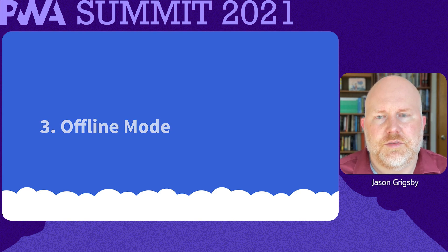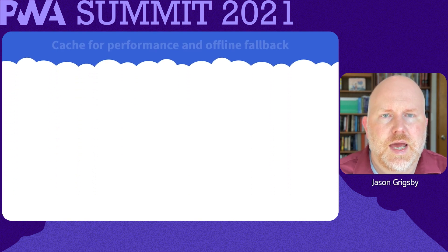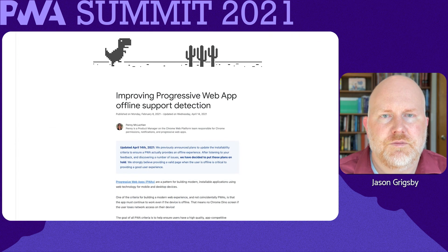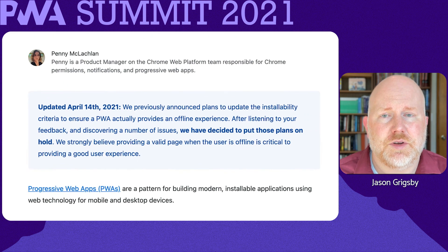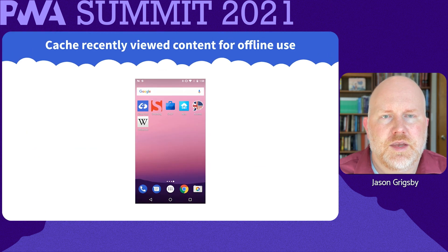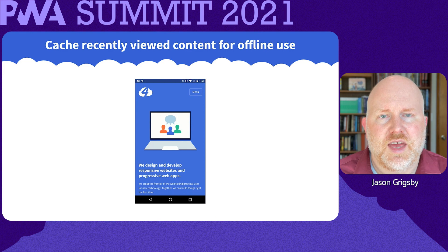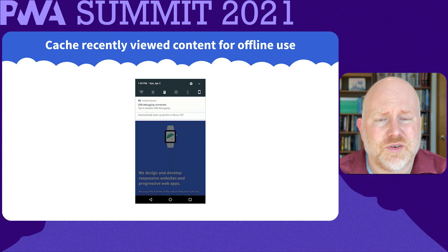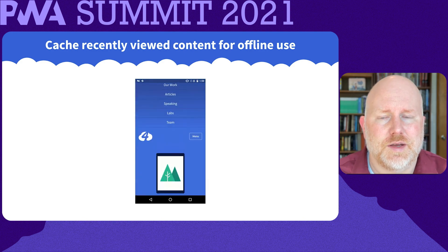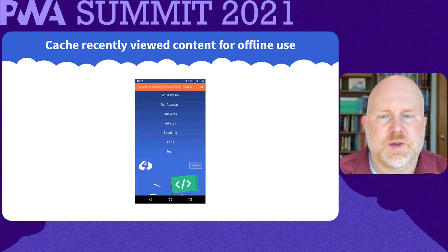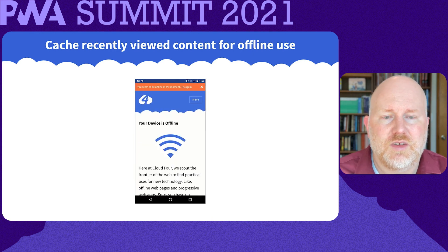The third factor is what you use offline for. At minimum, you should use caching to improve performance and provide an offline fallback page. In fact, Google was planning to make a fallback page part of the criteria for installation — they put this plan on hold, but you can be certain that something like this will be a requirement in the future. The next easiest thing to do for offline is to cache pages as people visit them. That's what we do at Cloud4, because we don't know what article someone is going to want to have access to offline. As someone visits pages, we cache them. If they're offline, they can still read those pages.